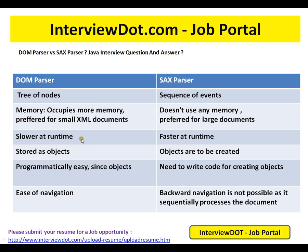DOM parser is slower at runtime because it loads the complete document. SAX parser is faster at runtime — these are two big advantages SAX parser has over DOM parser. In DOM, objects are stored; in SAX, objects are yet to be created, requiring code to create them. DOM is easier for navigation, but SAX does not support backward navigation as it processes the document sequentially. SAX runs faster and uses less memory.